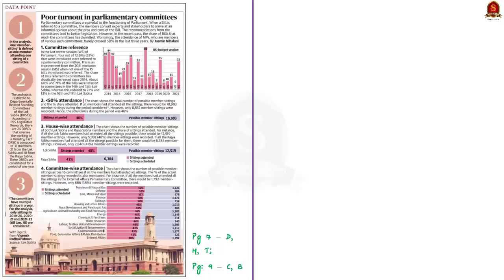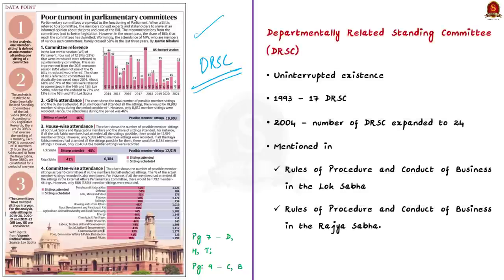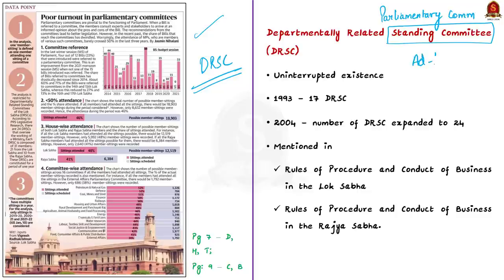The first news article focuses on poor attendance in parliamentary committees, particularly the departmentally related standing committees, in short DRSCs. In our parliament there are two kinds of parliamentary committees: standing committees, which work on a continuous basis, and ad hoc committees, which cease to exist when their assigned task is completed. The DRSC is a standing committee.